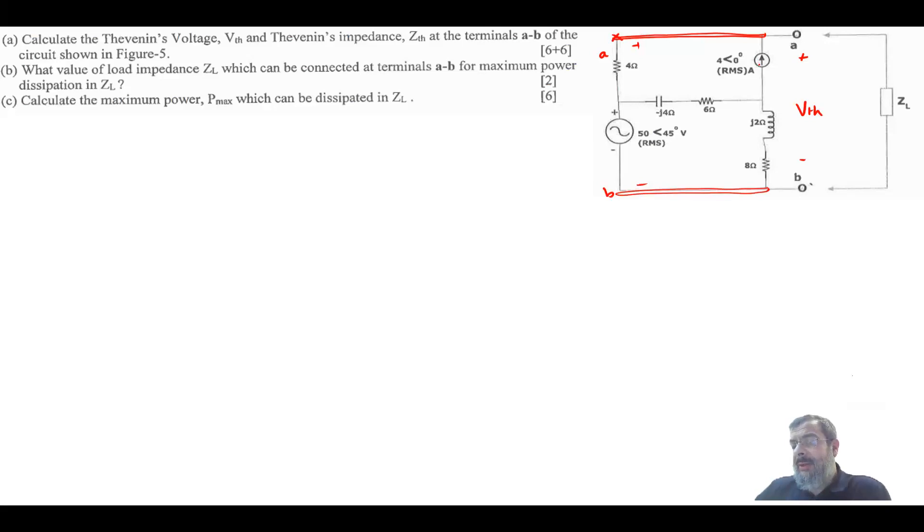Now when you see here this is the current source, the current source will go up. Basically it will not go to the right because this is an open circuit. So the current here, this is you will have 4 angle of 0. And the whole current will be going this way. So it means that the voltage across the 4 ohm is the 4 angle of 0 plus the 4 ohm. And this is a voltage source.